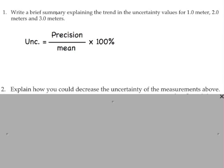Let's look at this question. Write a brief explanation or write a summary explaining the trend and uncertainty values for 1, 2, and 3 meters. So if you look at this equation, well first off, you can just look at your answers. But what you'll see is that the mean value went up. And if the denominator in a fraction goes up, the uncertainty goes down.